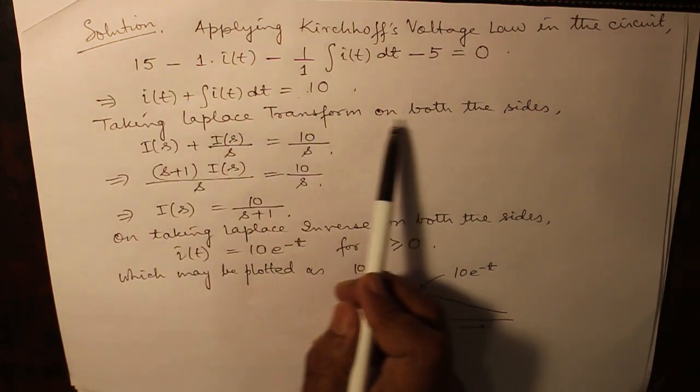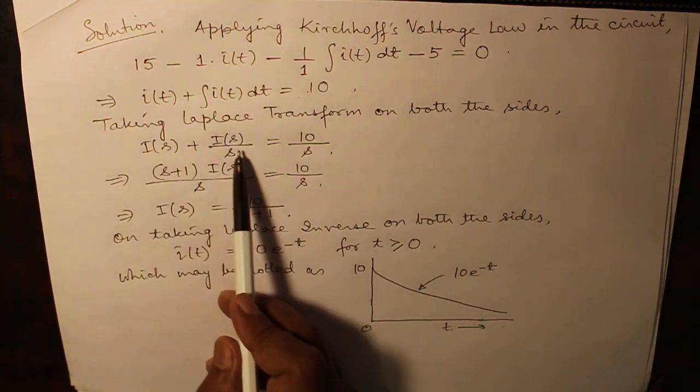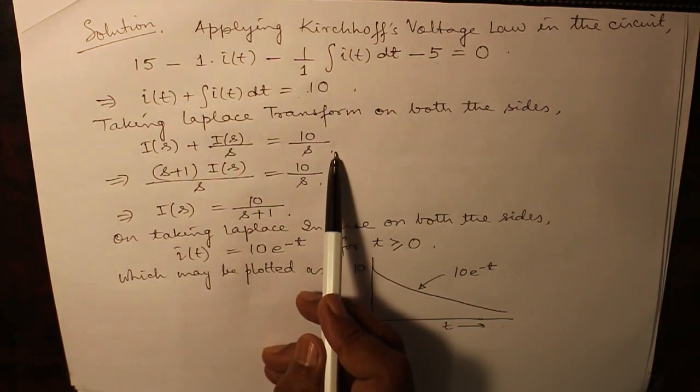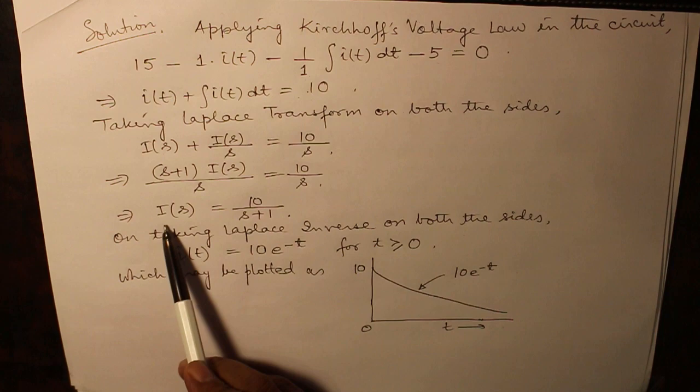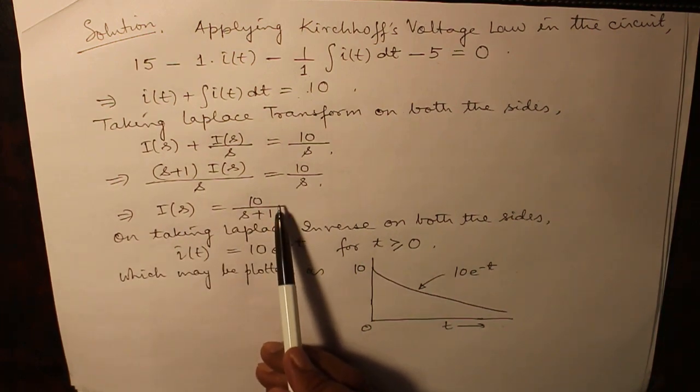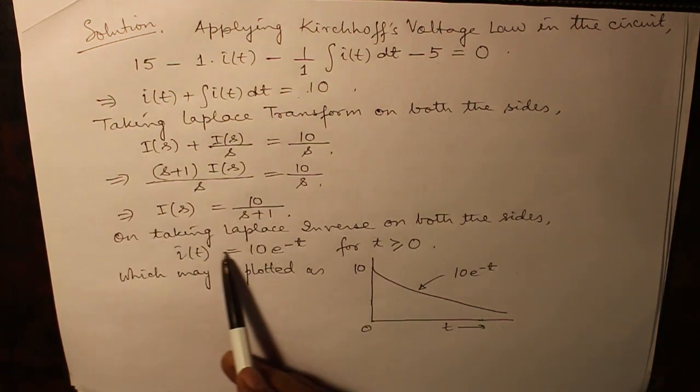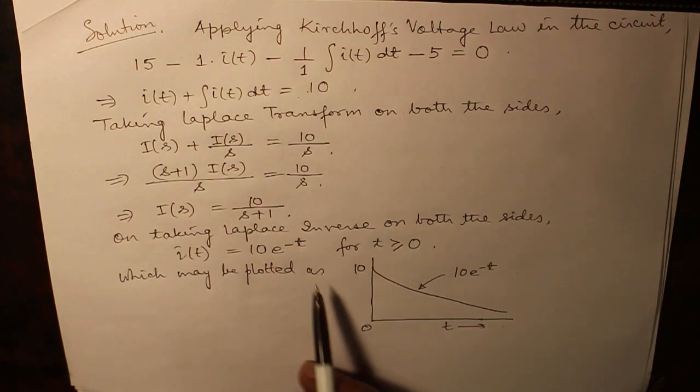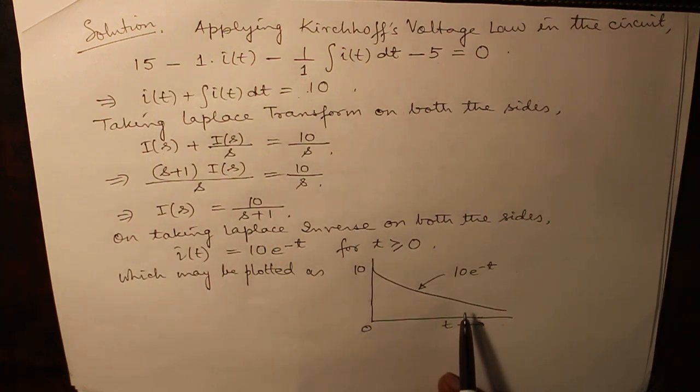Taking Laplace transform on both sides: I(s), I(s) over s, 10 over s. Combining together and getting the value of I(s) as 10 over (s plus 1) which on simply taking Laplace inverse gives us 10*e^(-t).